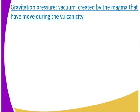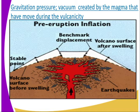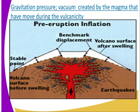Let us look at the causes of the earthquake. Number one is gravitational pressure. The gravitational pressure results in the earthquake. A vacuum is created by the magma that has moved during volcanicity. That vacuum must be occupied. The pull of gravity pulls everything towards the center of the earth, so as a result the crust of rock is caused to sink. That results in the shaking and trembling of the earth, as you can see — there is a space, then the collapse, and you can see where the earthquake is moving.